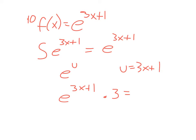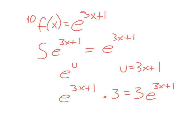This would be the derivative of e to the 3x plus 1, but of course this isn't what we started with. We can't say that the antiderivative of this is this, because clearly when we took the derivative we didn't get the same thing. But we're really close — if we could just divide by that 3, then really what we wanted was 1/3 e to the 3x plus 1. That's kind of doing it by trial and error.